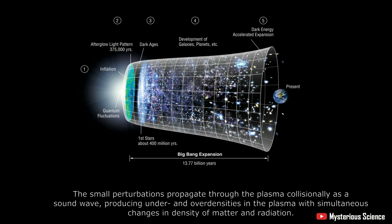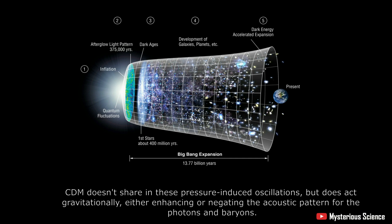The small perturbations propagate through the plasma collisionally as a sound wave, producing under and over densities in the plasma with simultaneous changes in density of matter and radiation. CDM doesn't share in these pressure-induced oscillations, but does act gravitationally, either enhancing or negating the acoustic pattern for the photons and baryons.